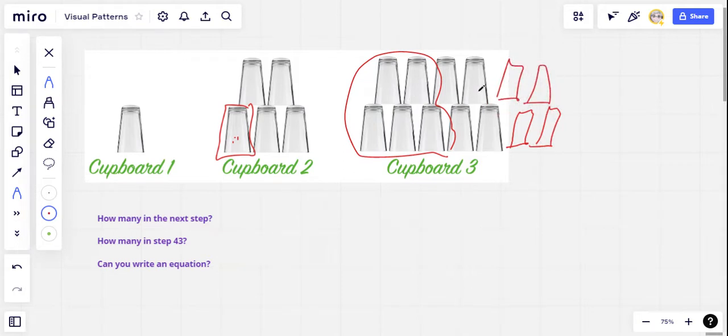And I'd have, let's see, two, four, six on the top, seven, eight, nine, ten, eleven, twelve, thirteen. So it looks like in step four, in cupboard four, I'd have 13 glasses.